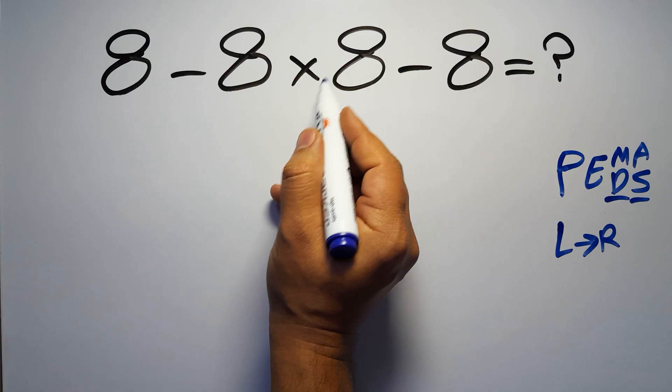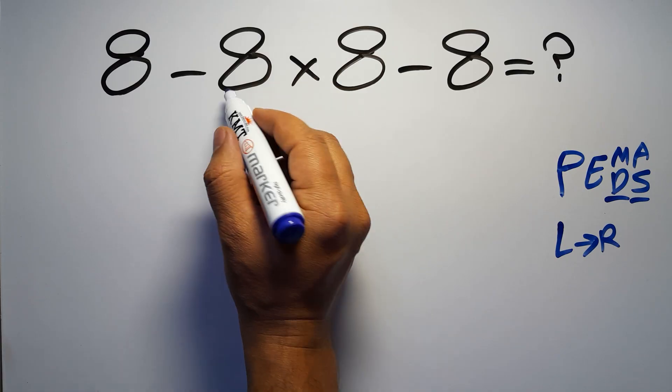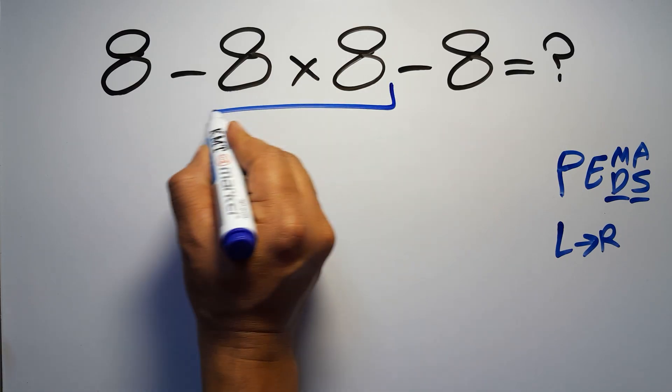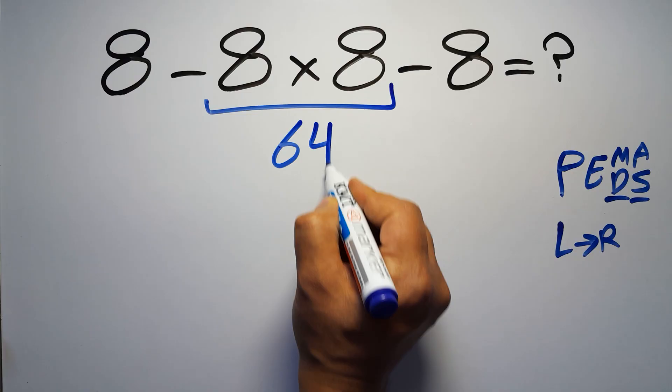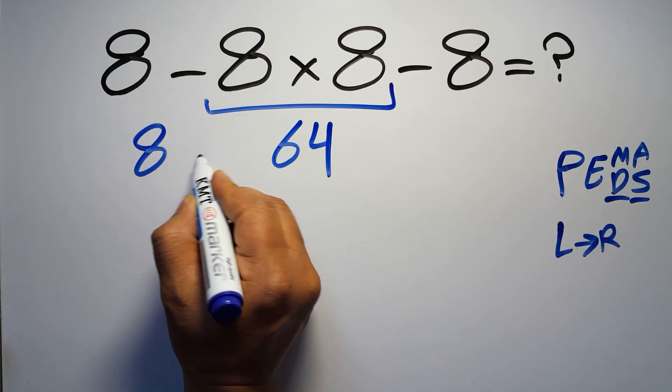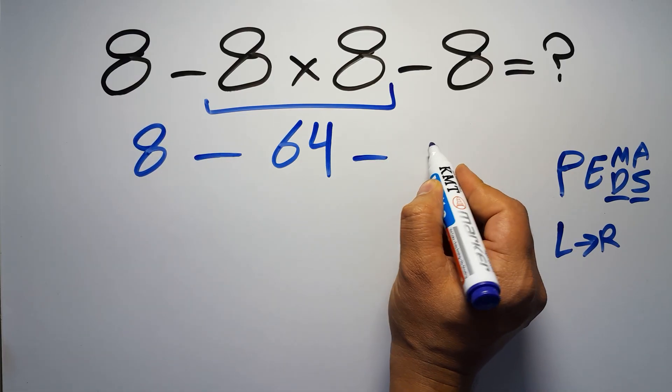So first we have to do this multiplication. Eight times eight is just 64, so we get eight minus 64 minus eight.